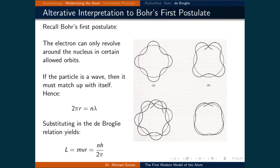Substituting in the de Broglie relation, lambda equals h over momentum, yields the angular momentum mvr equals nh over 2 pi, which was Bohr's postulate. The reason the electron can only revolve in certain allowed orbits is because the electron is acting like a standing wave and can perpetually remain in that state. The fact that particles can act like waves provided a physical rationale for Bohr's first postulate.